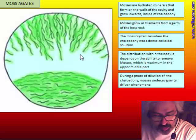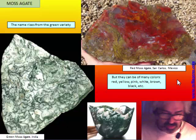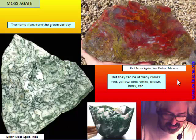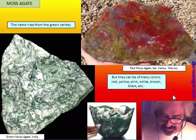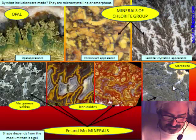Moss agate takes its name from the green variety — the more popular one, usually from India in ancient times, used for jewelry and decorative objects. But there is moss of almost every color: red, yellow, pink, white, brown, black, etc. So not only green varieties are moss agate — all these colors are considered moss agate.